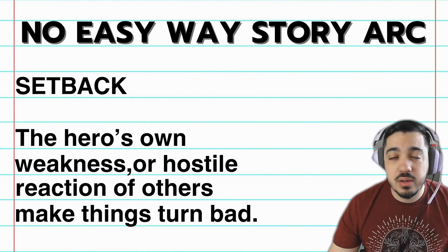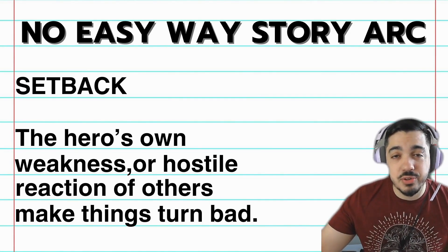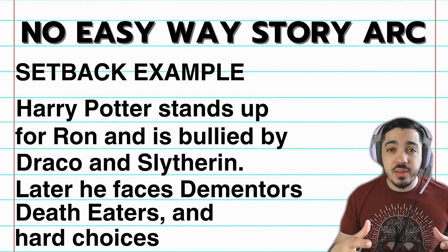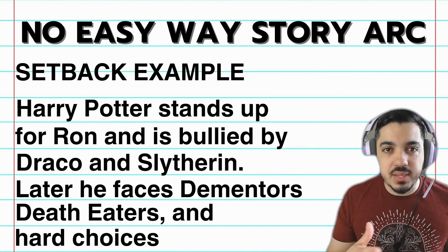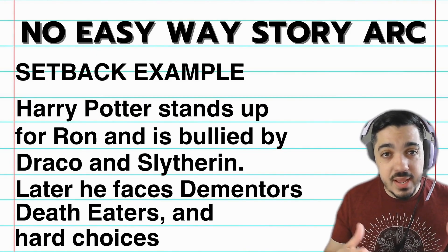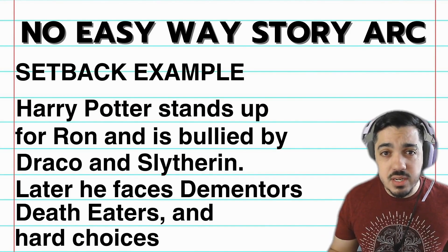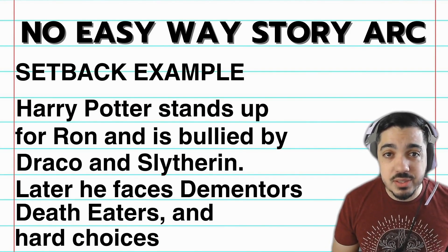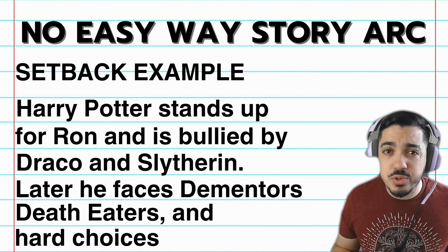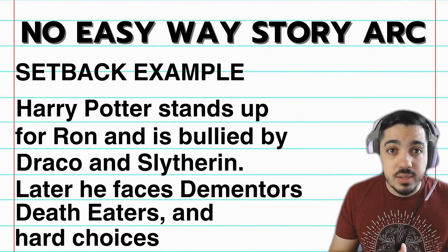Setback is where either the main character realizes they still don't have their full potential, or hostile external forces come in and give them a very hard time achieving their goal. In Harry Potter, the first conflict that begins this long journey is when he stands up for Ron against Draco Malfoy and makes Draco an enemy. Throughout the series, Harry has to deal with setbacks from Dementors, Slytherin House, Death Eaters, and all the hard choices he has to make to stop Voldemort.